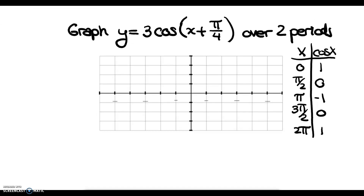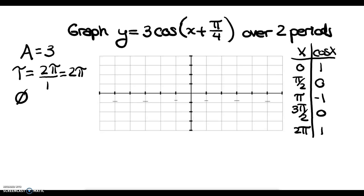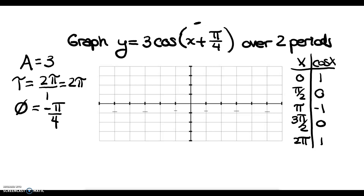Let's calculate our amplitude for the next example. We have an A value of 3, so our amplitude is 3. Our B value, the number in front of x, is still 1, so our period is 2 pi over 1, which is 2 pi. Our phase shift — I call it a phase shift rather than a horizontal shift — is negative pi over 4, because the equation should be written as subtracting, giving a phase shift of negative pi over 4.